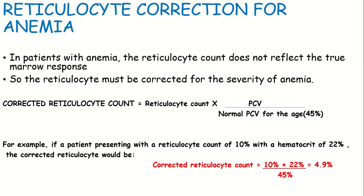Coming on to reticulocyte correction for anemia: in anemic patients, we need to correct the reticulocyte count. The normal PCV is 45%. If a patient has hematocrit of 22% and reticulocyte count of 10%, the corrected reticulocyte count is: 10% into 22% divided by 45%, which equals 4.9%. This is the reticulocyte correction for anemic patients using PCV values.